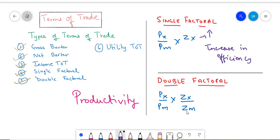Similarly, the double factorial terms of trade is given as prices of exports divided by prices of imports multiplied by ZX upon ZM. Here, ZM is the productivity index of the country you are importing from.